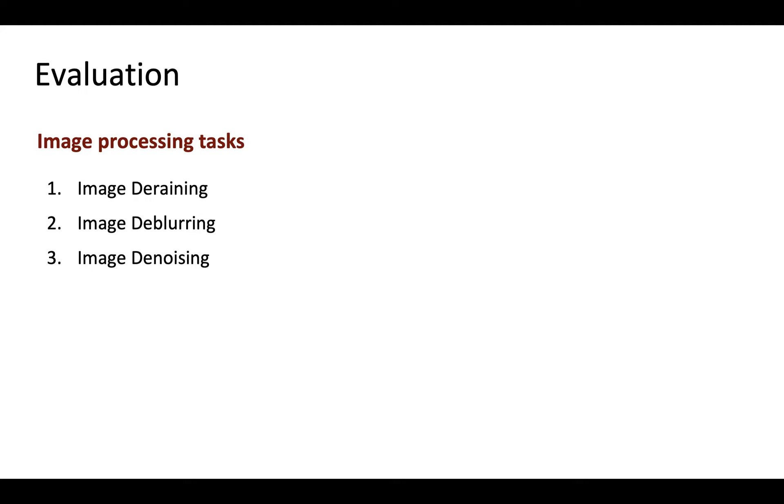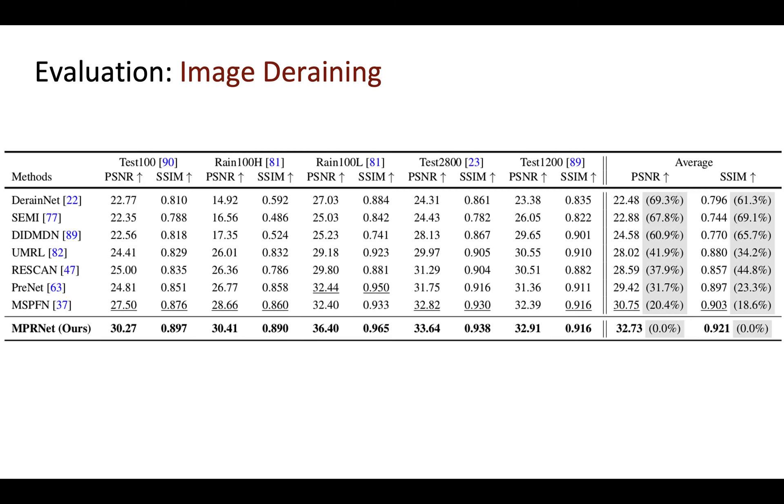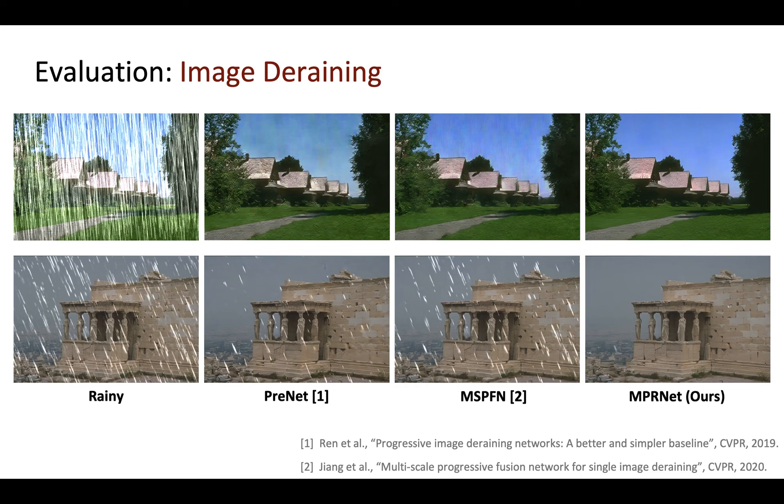We perform experiments for various image processing tasks, including image deraining, deblurring, and denoising. For image deraining, evaluation is performed on five different datasets. When averaged across all datasets, our method shows 20% improvement over the previous best method, MS-BFN. Here are some visual results showing that our algorithm is effective in removing rain streaks of different magnitudes.